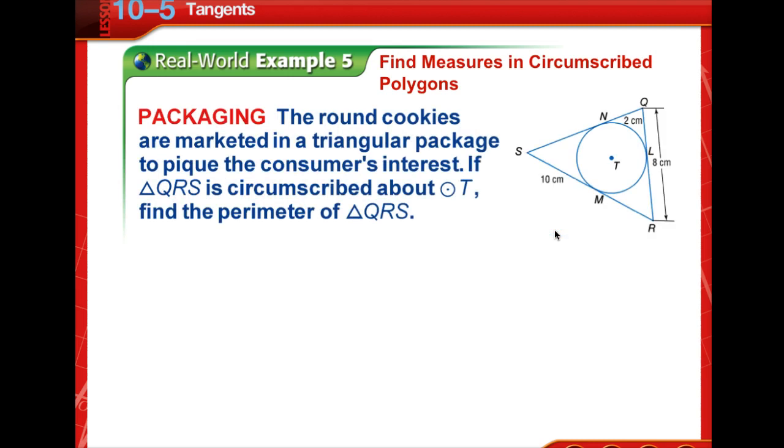Now you can use theorem 10-11 to find missing measures in circumscribed polygons. Looking at real world example 5, the round cookies are marketed in a triangular package to pique the consumer's interest. If triangle QRS is circumscribed around circle T, find the perimeter of triangle QRS.